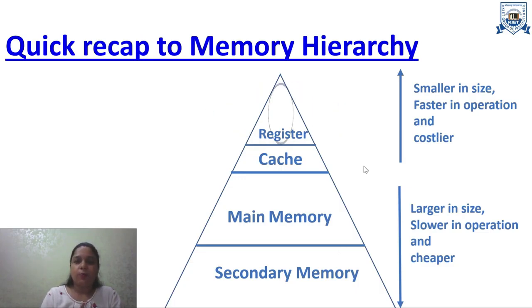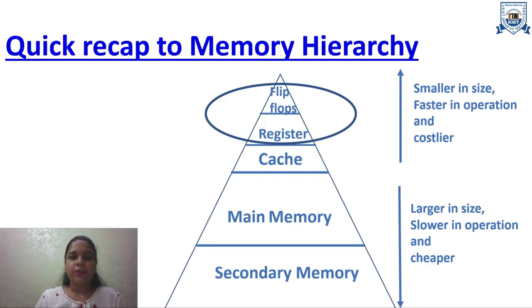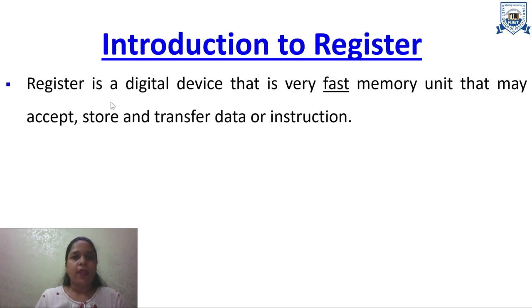Register is our topic today. What is a register? A register is a memory device that is smaller in size and is made of flip-flops. It is a digital device — a very fast memory unit — and it can accept, store, and transfer data or instructions. We call it a digital device because it stores data in the form of zeros and ones. It is the fast memory unit of the CPU.